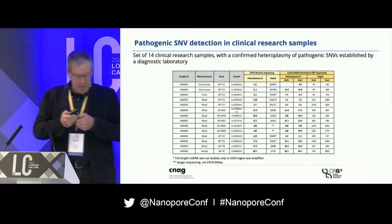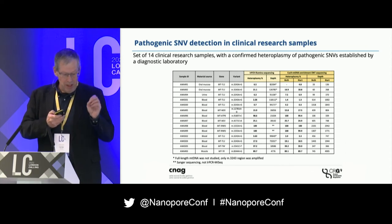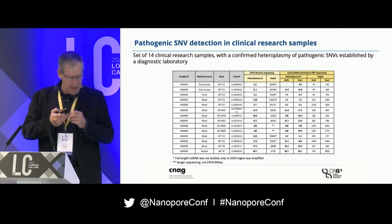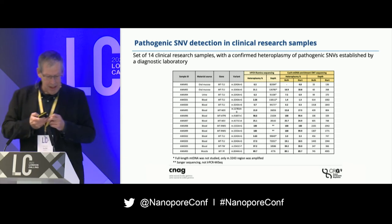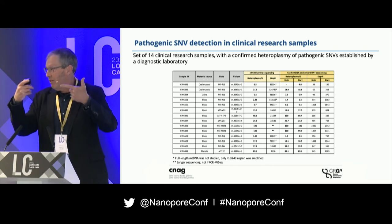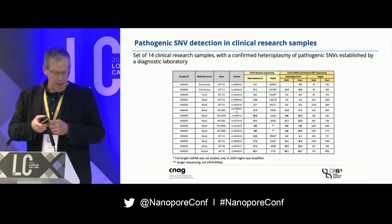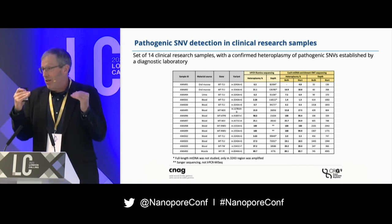Here I have a set of 14 clinical samples. I want to point you to the fifth line, which is AW6500. That has a heteroplasmy that we were able to detect at 0.2% — so that is two molecules out of 1,000 that are in an alternative configuration to the wild-type sequence in this particular sample. We are able to detect down to that level.